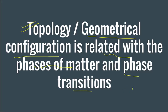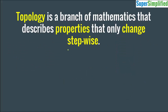When the material was above critical temperature, it was having a certain topology. And after it came down below the critical temperature, it has a different topology — the topology has changed. So topology is a branch of mathematics that describes properties that change stepwise in whole numbers.